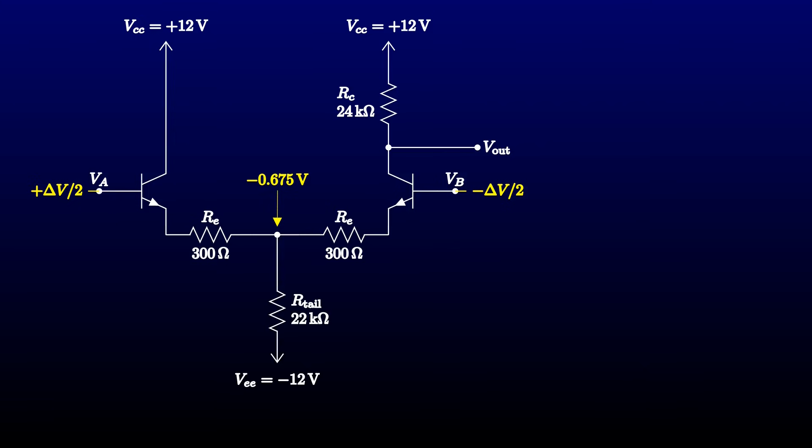Since we're holding the emitter at a constant voltage, we have a common emitter amplifier here, as advertised. We know that the small signal gain of a common emitter amplifier is the ratio of the collector resistor to the emitter resistance, including the intrinsic resistance. With these values, we expect a small signal gain of 30.